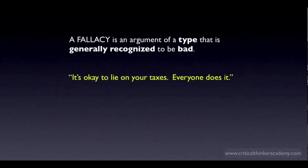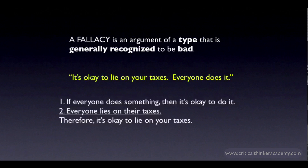Here's an example. It's okay to lie on your taxes — everyone does it. This is a bad argument, but it's not bad because of its structural form. It's bad because it relies on an assumed premise that most of us would reject. Here's how you might reconstruct this argument: the assumed premise is something like, if everyone does something, then it's okay to do it. When you reconstruct the argument in this way, the logic is perfectly fine — it's a valid argument. The problem is with that first general premise.